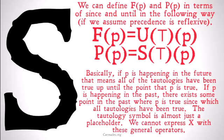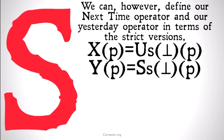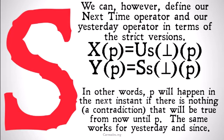We're not going to be able to express the next operator X with these general operators. However, we can define our next time operator and our yesterday operator in terms of the strict versions, remembering that the general versions define precedence as reflexive, while the strict versions put precedence as irreflexive. So, next time that P is the same thing as there is a contradiction until P — from now until P. In other words, P will happen the next instant if there is nothing, or a contradiction, that will be true from now until P. So if there's nothing in between now and P that will be true, or if there's a contradiction of something being true between now and P being true, that means P happens in exactly the next instant. The same works for yesterday and since, just going backwards into the past.